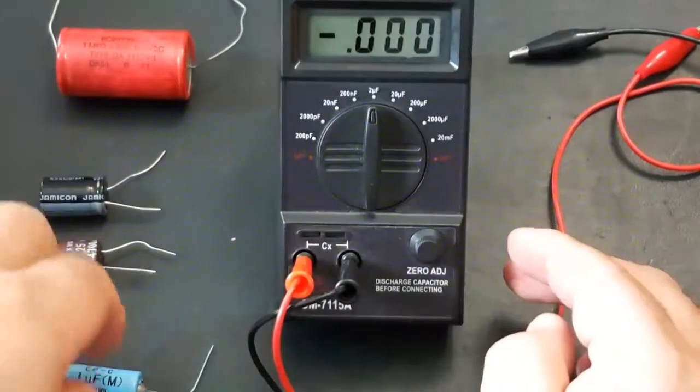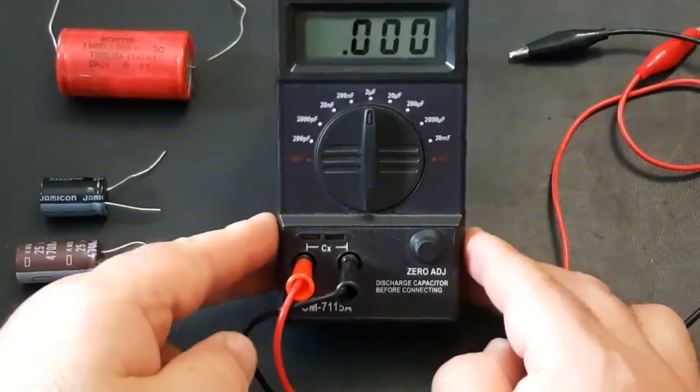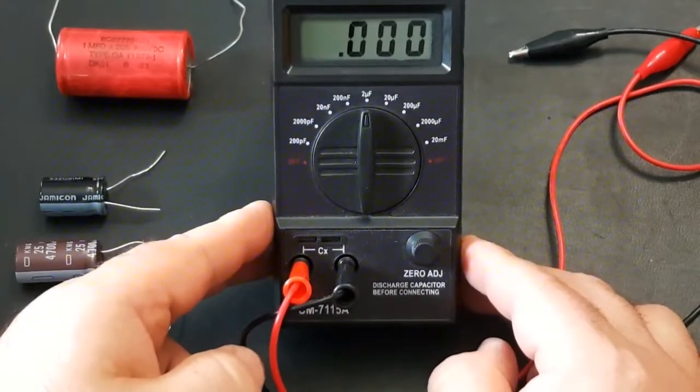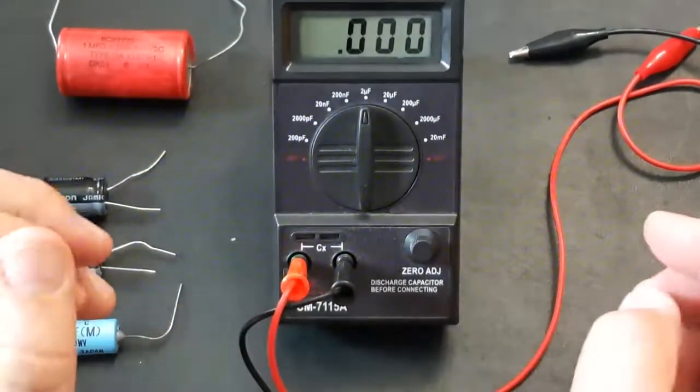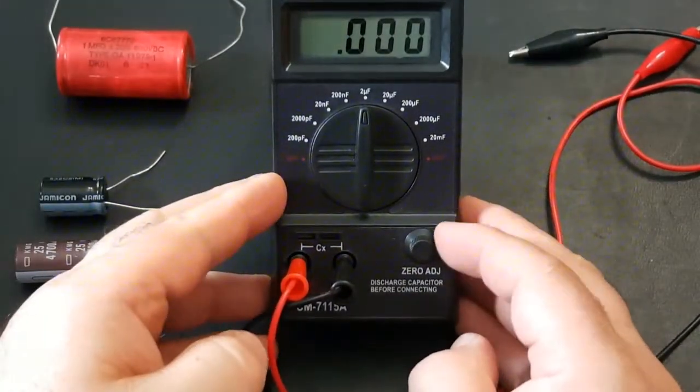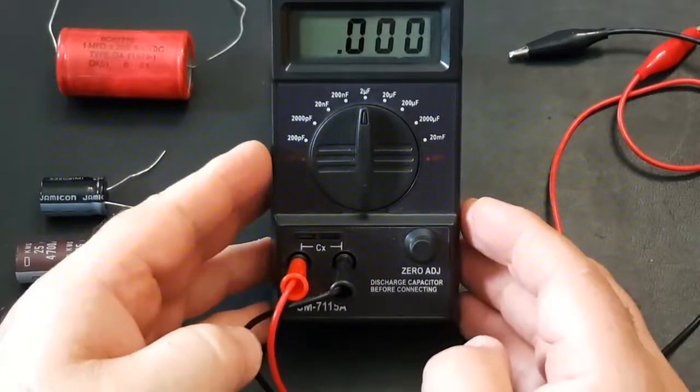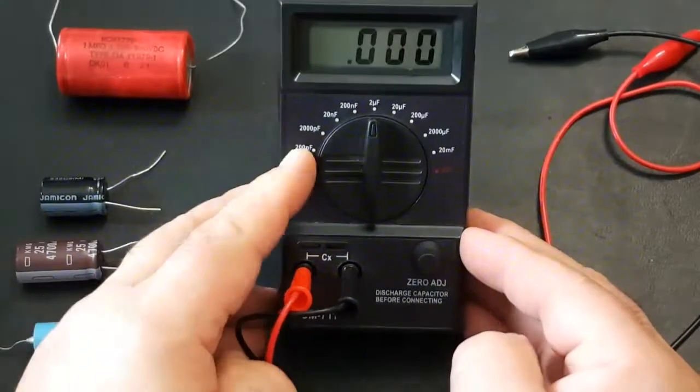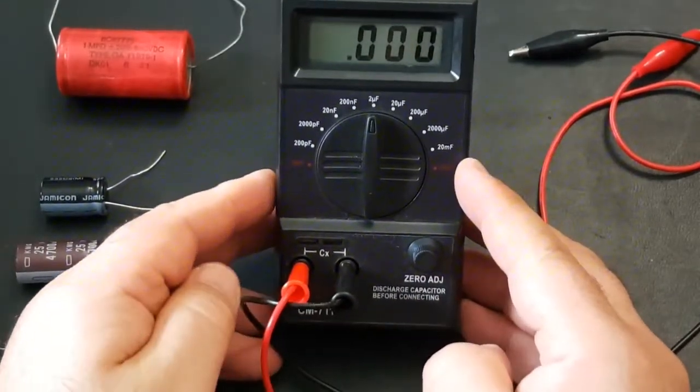It has a zero adjust, so if you have any sort of misreading, you're out a little bit, you can always bring it back to a zero level. I've only had to use that twice since I've had the meter.